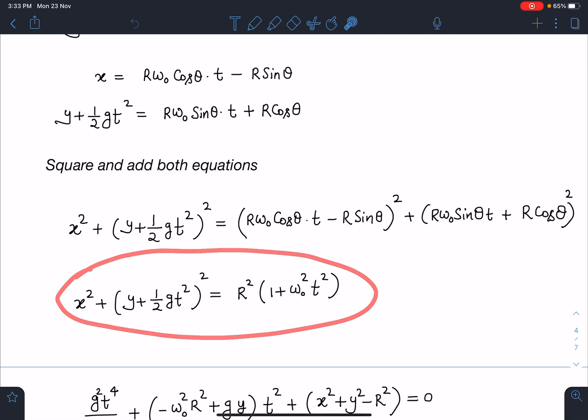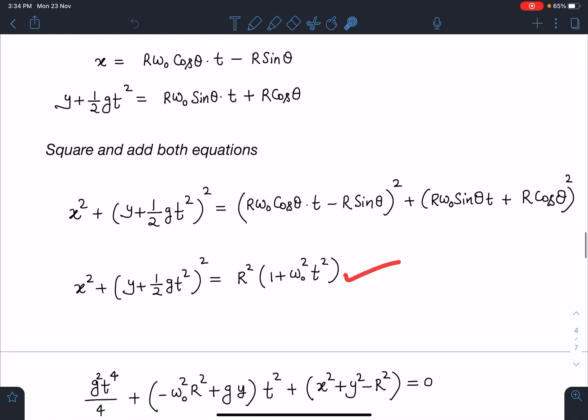When you simplify finally, you are going to get x² + (y + ½gt²)² = R²(1 + ω₀²t²). Now when you further arrange this equation, we are going to get an equation like this.